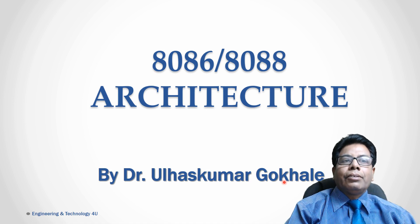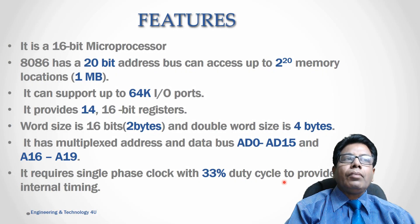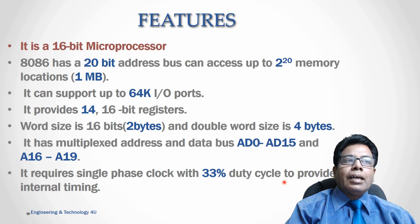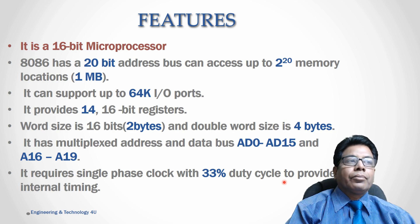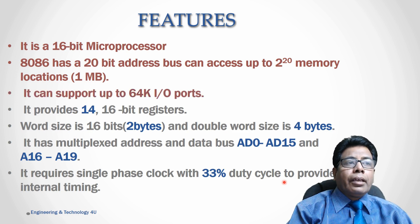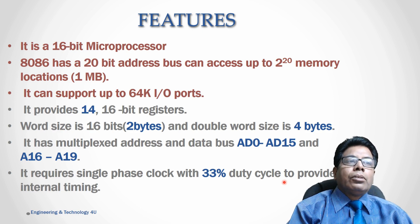Let us start with the features. It's a 16-bit microprocessor. The 8086 has a 20-bit address bus and can access up to 2^20 memory locations, so the address space is 1 MB. It can support up to 64K I/O ports, since the address bus for I/O is 16-bit, giving 2^16 or 64K ports.